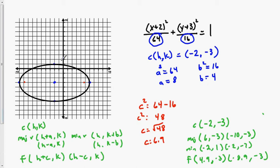Let's verify these points on the graph. Negative 2, negative 3 gives us the center — correct. The point (6, negative 3) is a major vertex; (negative 10, negative 3) is the other major vertex. Minor vertices at (negative 2, 1) and (negative 2, negative 7) check out. Foci at (4.9, negative 3) and (negative 8.9, negative 3) are verified. That works for every one of those points.